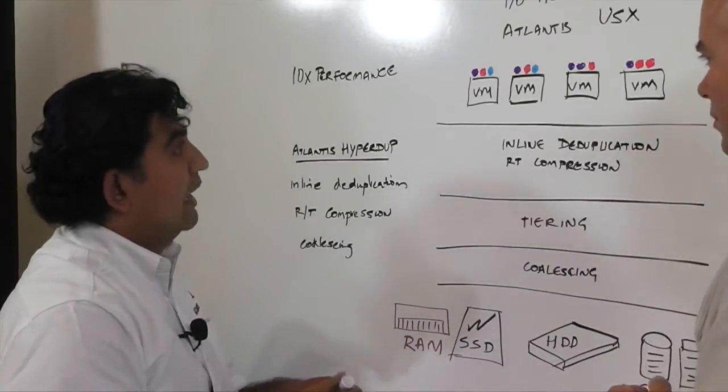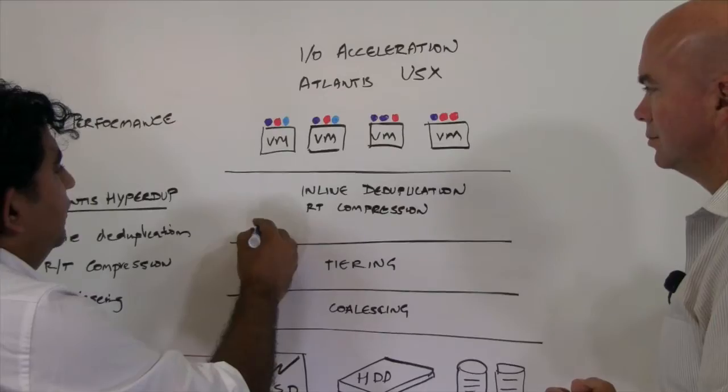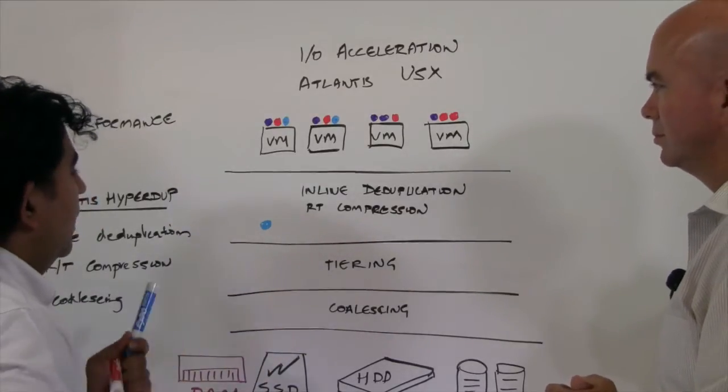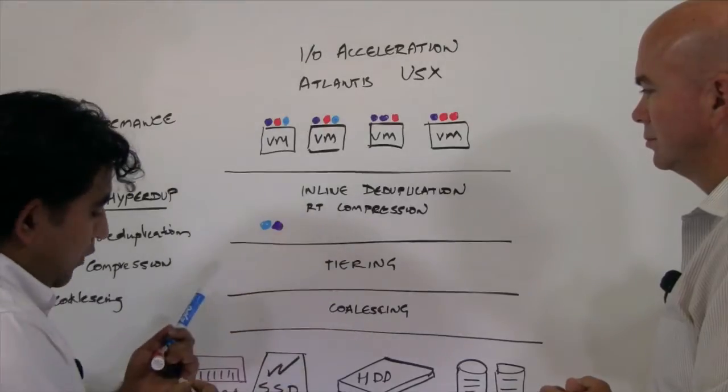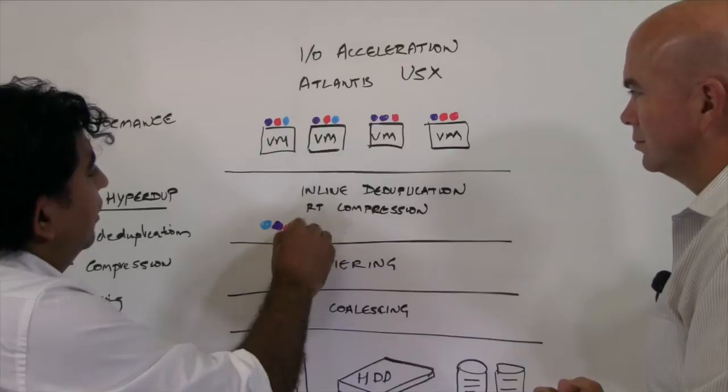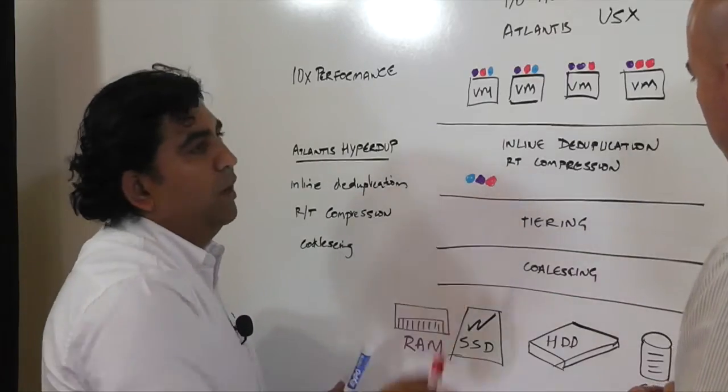Let me just illustrate the life of the I/O. Deduplication will reduce this block footprint down to something very unique. So you'd have only one copy of the blue blocks, one copy of the purple blocks, and then one copy of the red blocks over here. And the algorithms are now looking at the access patterns of these different types of blocks and deciding what should be tiered where.